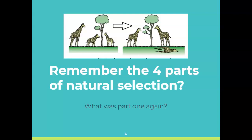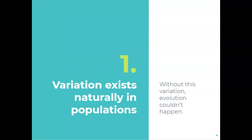Remember, there are four conditions that have to be true for natural selection to happen: variation exists in populations, more babies are born than can live so there's competition for resources, those that survive and reproduce will pass on those traits to their offspring. And without variation, we couldn't have evolution because nothing would ever change.